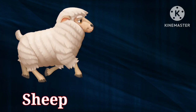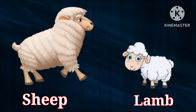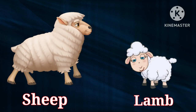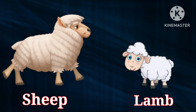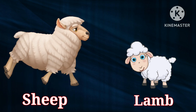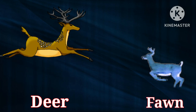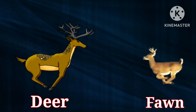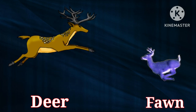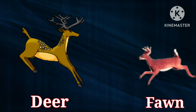Sheep. Lamb. The baby of sheep is called Lamb. Deer. Fawn. The baby of deer is called Fawn.